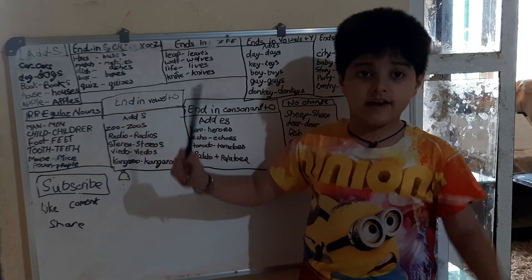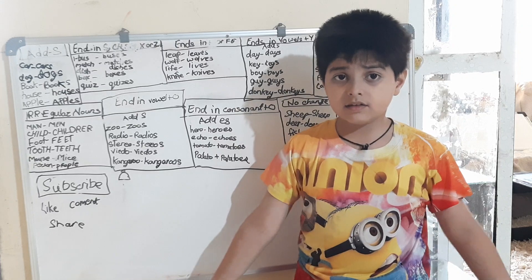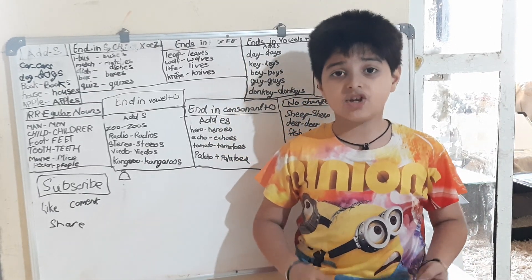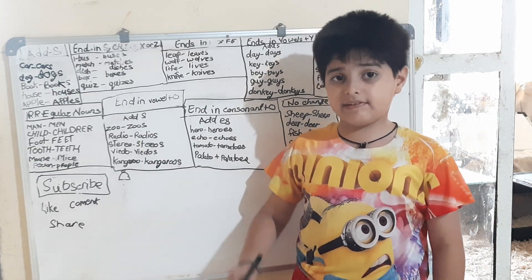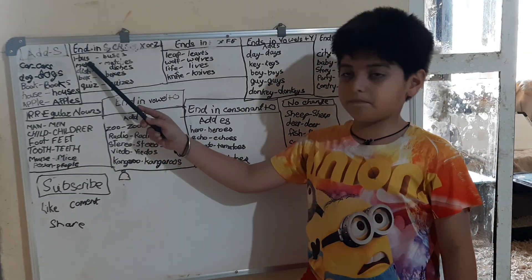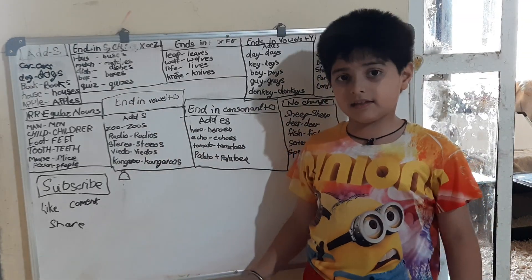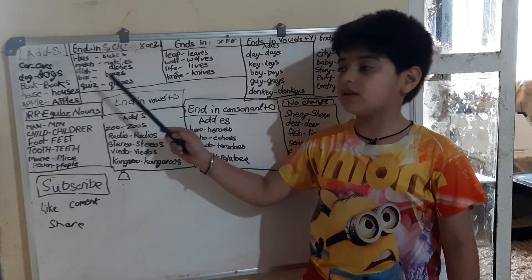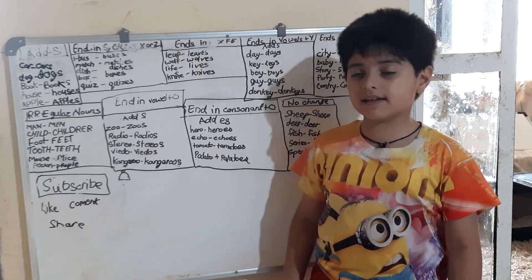The next rule: words ending in S, CH, SH, X, or Z — the last letter should be S, CH, SH, X, or Z — then we will add ES. Let's take an example: bus becomes buses. Same like this — match becomes matches, dish becomes dishes, box becomes boxes, quiz becomes quizzes.